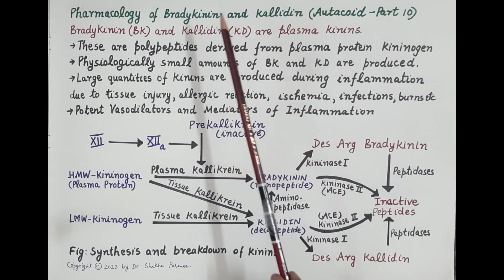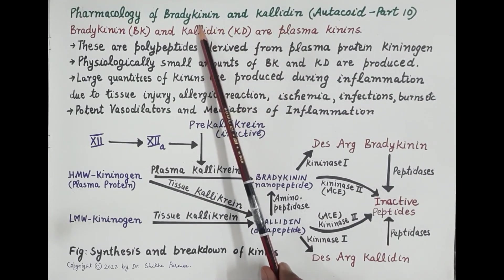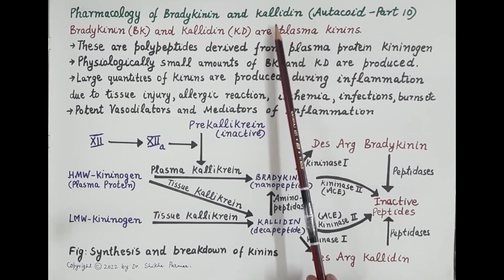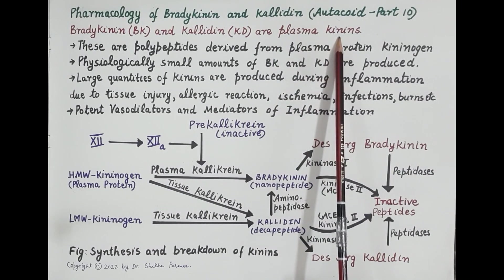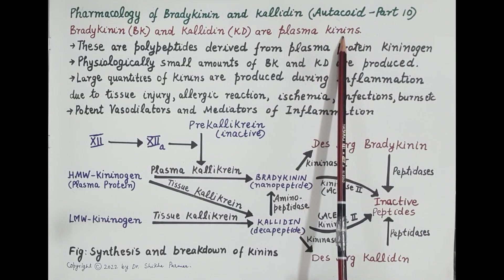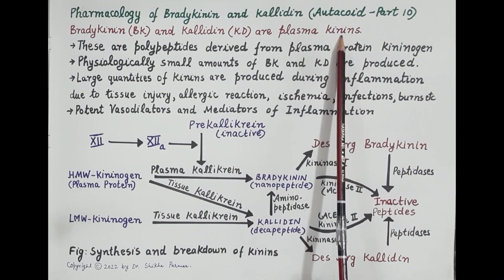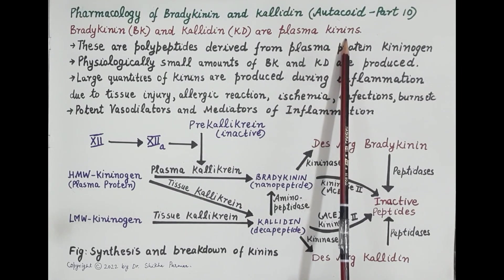Hello students. In today's video we are going to study pharmacology of bradykinin and calidin. Bradykinin and calidin are plasma kinins. Plasma kinins are inflammatory mediators; they are produced in large quantities during inflammation. Inflammation is the edema or swelling that occurs because of tissue injury, and these kinins are produced in large quantities during inflammation.